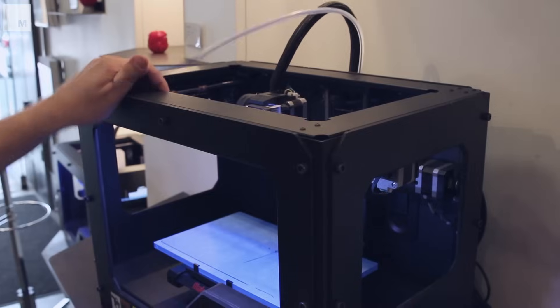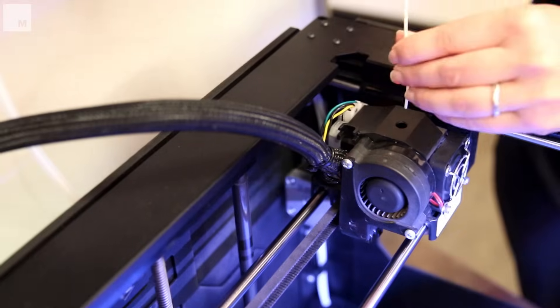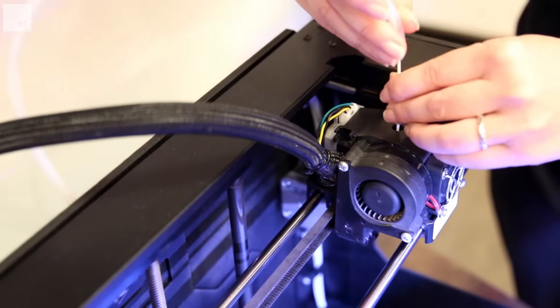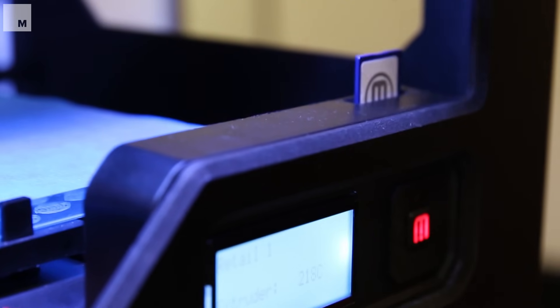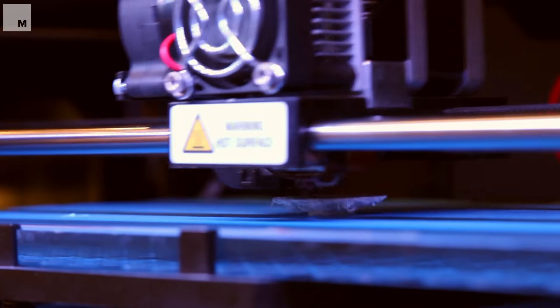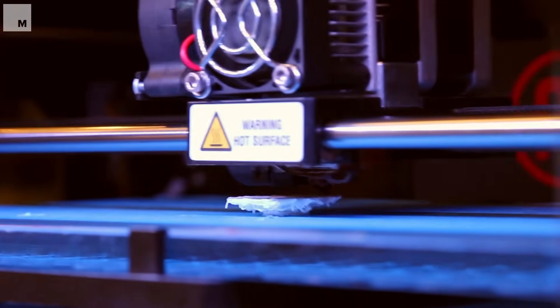Some printers, like the MakerBot Replicator 2, have renewable bioplastics pooled in the back of the device, almost like a string. When the printer receives the data, it pulls the material through a tube, melts it, and deposits it to the plate, where it instantly cools.